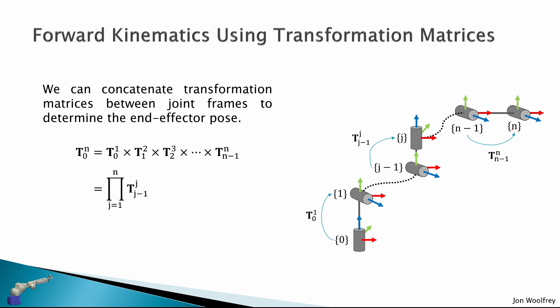Right, so this is just the product of all transforms from J minus 1 to J. But now we just need to describe the transform from J as a function of simple geometry.